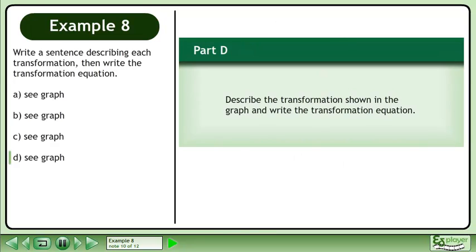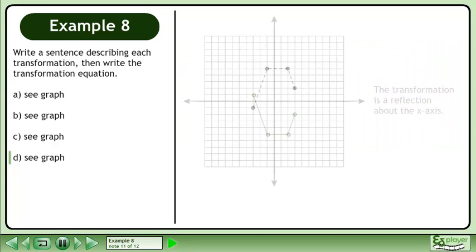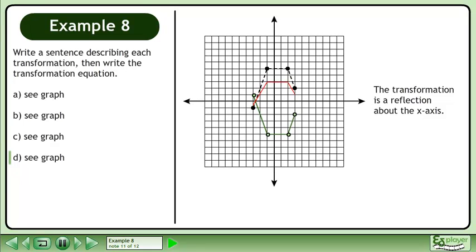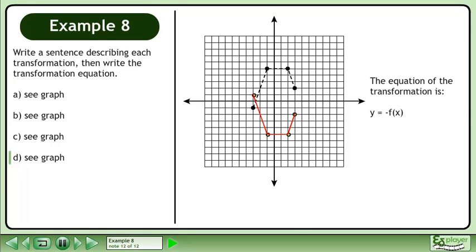In Part D, we'll describe the transformation shown in the graph and write the transformation equation. The transformation is a reflection about the x-axis. The equation of the transformation is y equals negative f.